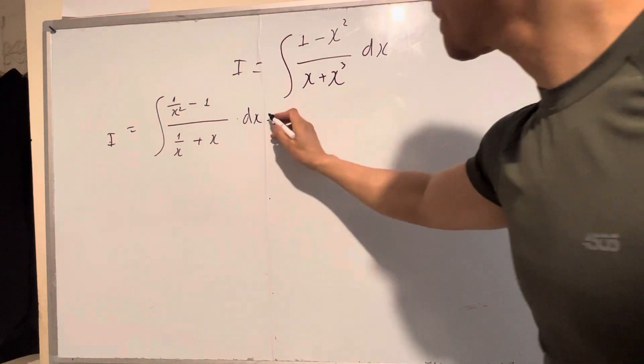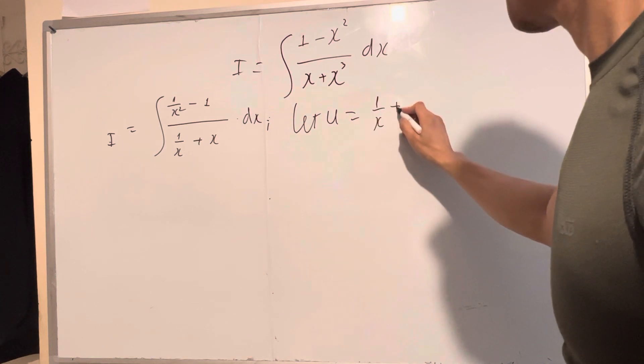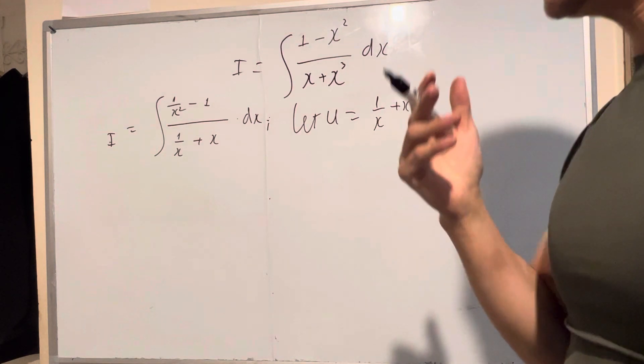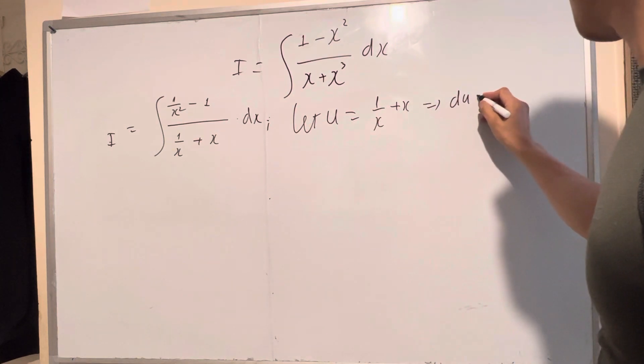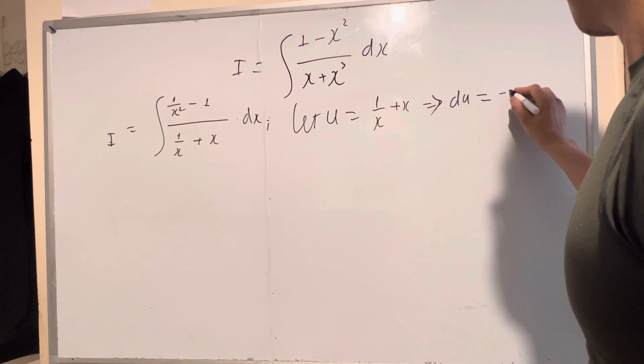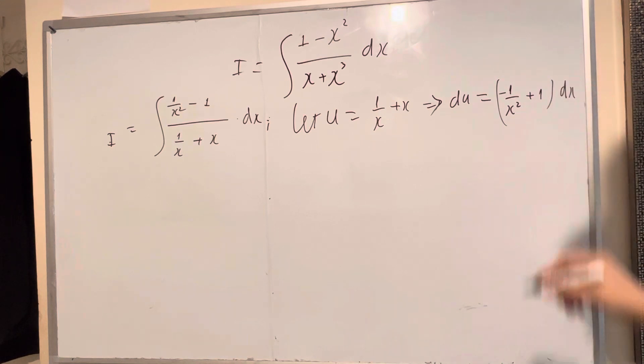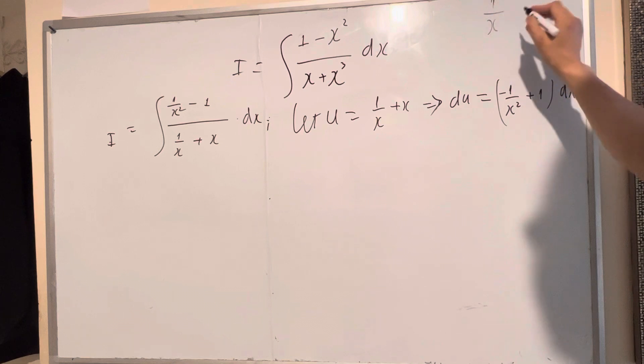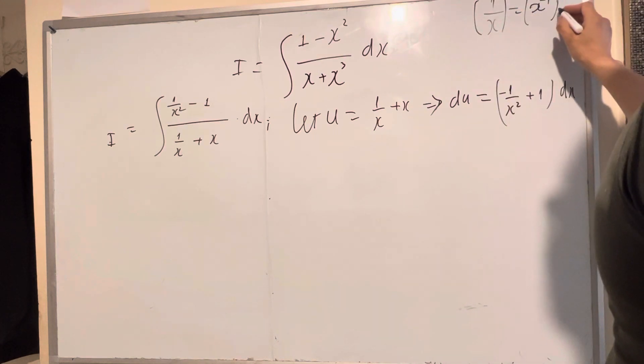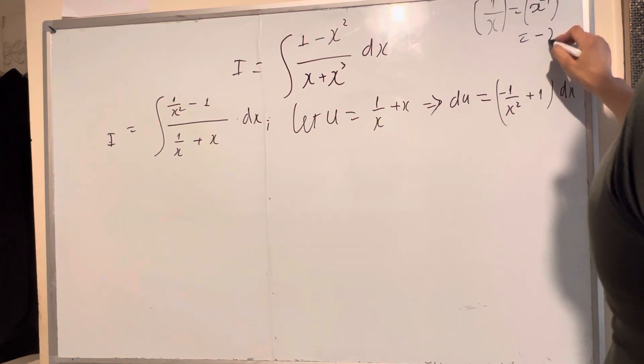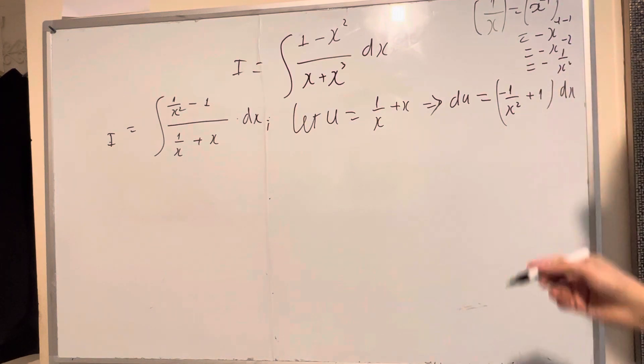Now, let u equal 1 over x plus x, and then you differentiate both sides. You get du equal negative 1 over x squared plus 1 dx. Why? Because 1 over x equals x to the negative 1, and then you differentiate that equals negative 1 times x to the negative 2, which equals negative 1 over x square.